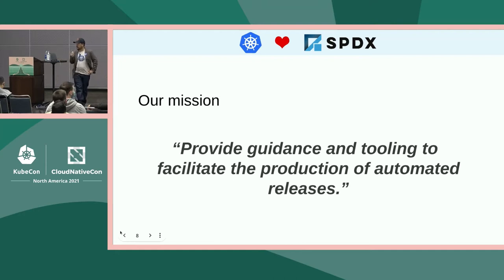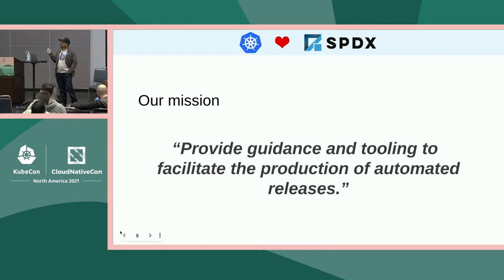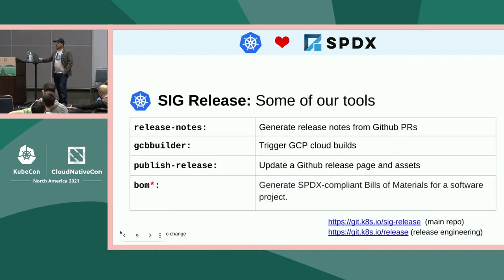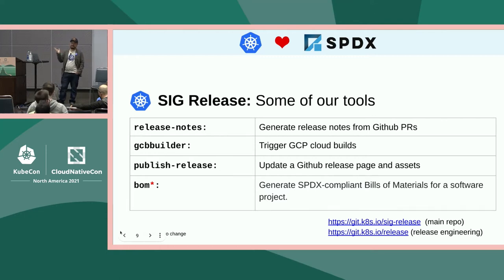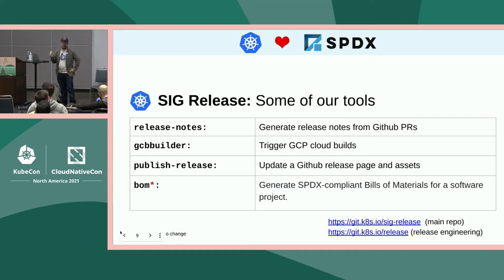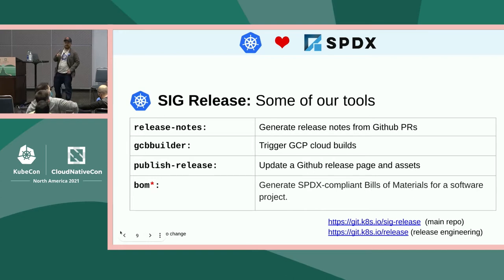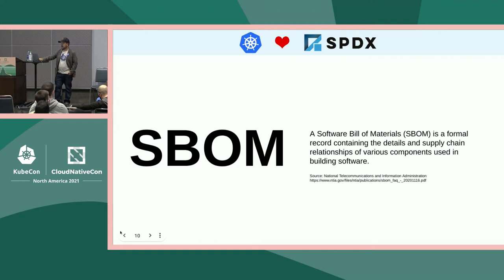Our mission is to provide guidance and tooling to facilitate the production of automated releases. This mission statement doesn't specifically mention Kubernetes, which is why we try to make our tools as general-purpose as possible. You may be familiar with the release notes tool, probably the most popular utility from SIG Release, which is used by many other projects to generate their release notes. We also publish a general-purpose cloud build controller, a publish-release tool to upload and sync releases with GitHub, and finally the bom tool which is what we're talking about today.